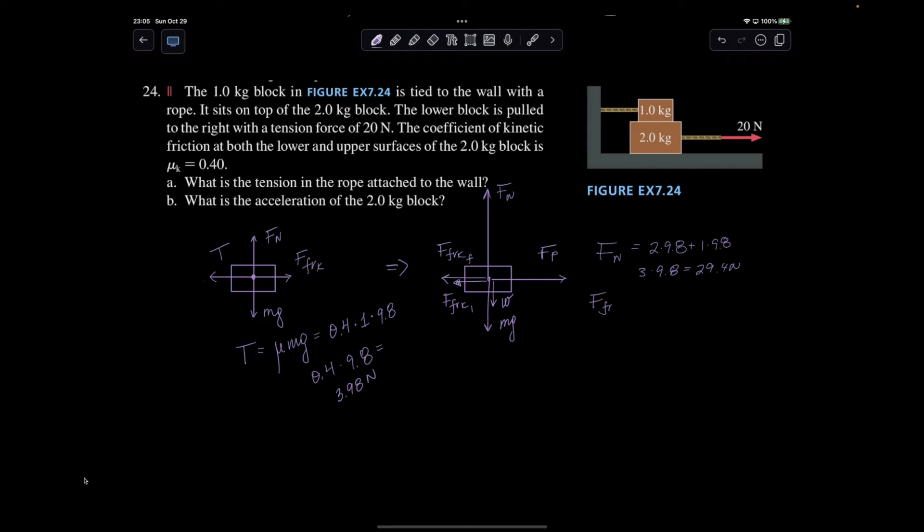Force of friction between the two kilogram object and the floor is going to be 0.4 times 29.4, which is 11.8.